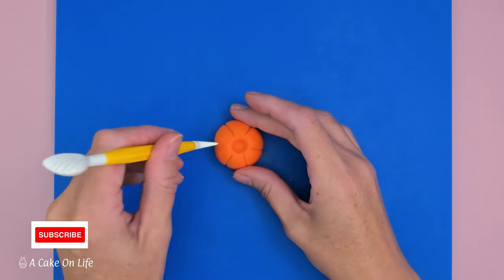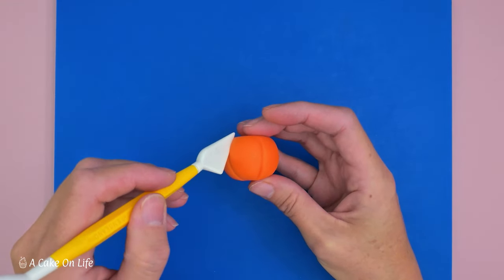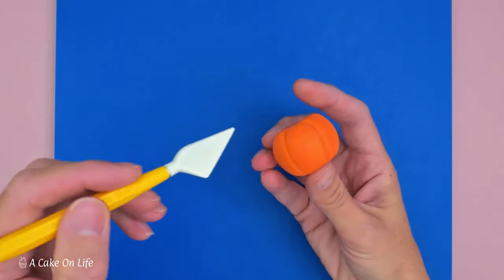So now I've done the sides, I'm just going to go around and do the underneath. So just follow the scores that you've done before and go all the way around.